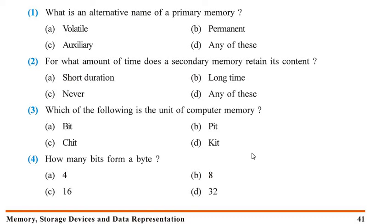Question number 1: What is an alternative name of primary memory? The answer is volatile. Volatile means temporary.